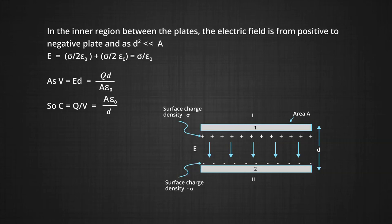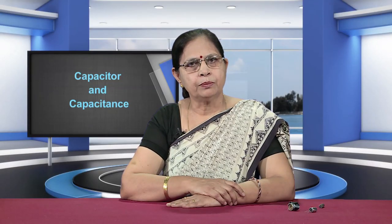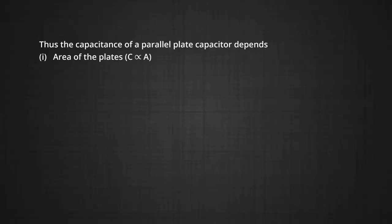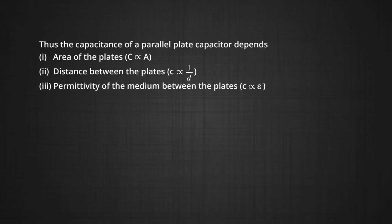As C is equal to A epsilon naught upon D, thus the capacitance of a parallel plate capacitor depends: number one, upon area of the plate — the capacitance is directly proportional to area of the plate. Number two, it depends upon the distance between the plates D, and C is inversely proportional to D. Third, permittivity of the medium also plays a role — it also depends upon permittivity of the medium between the plates, that is, C is proportional to epsilon.